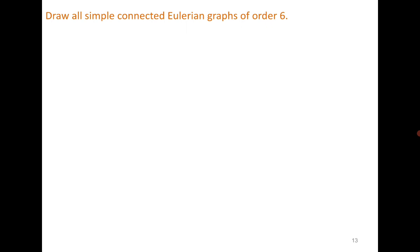Now let us move to an interesting question: draw all simple connected Eulerian graphs of order 6. Order 6 means the graph must be simple and have 6 vertices. First think about how to cover all such graphs. Since the graph is Eulerian, all vertices must have even degree, so consider the possible degree sequences where every entry is even.